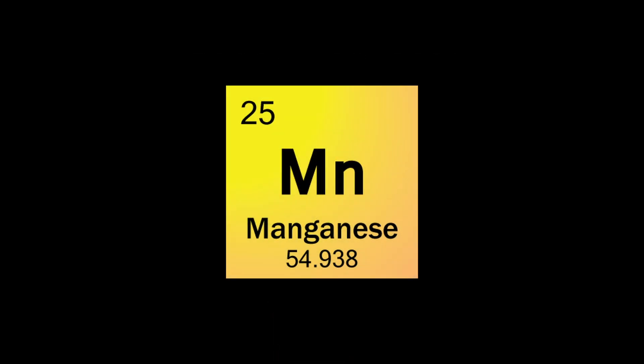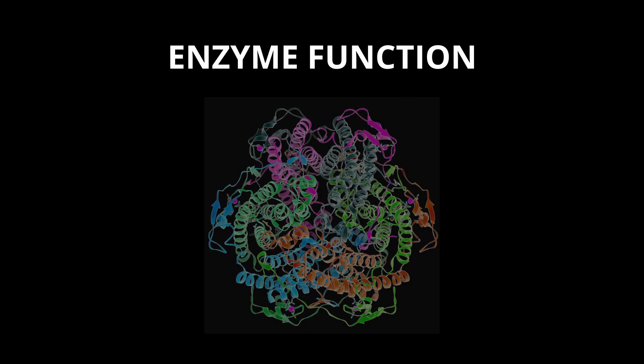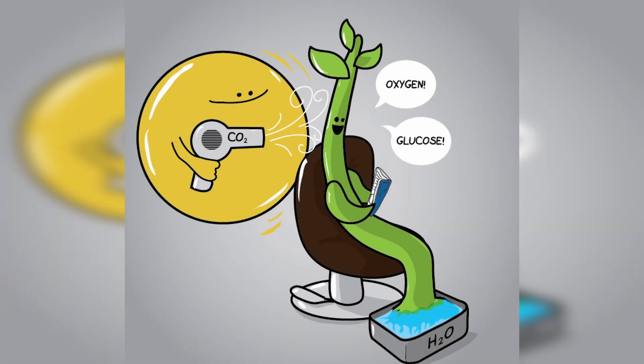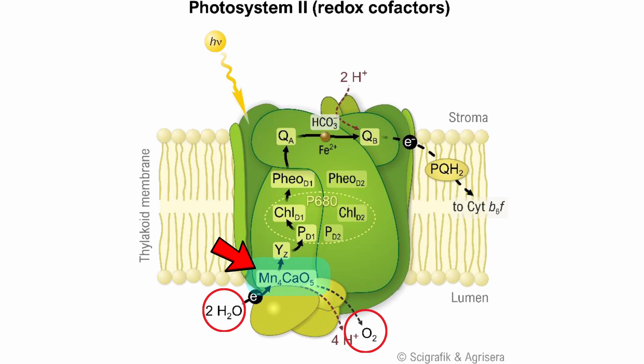Biologically, manganese is an essential element required for enzyme function. For example, the enzyme responsible for converting water molecules to oxygen during photosynthesis contains four atoms of manganese.